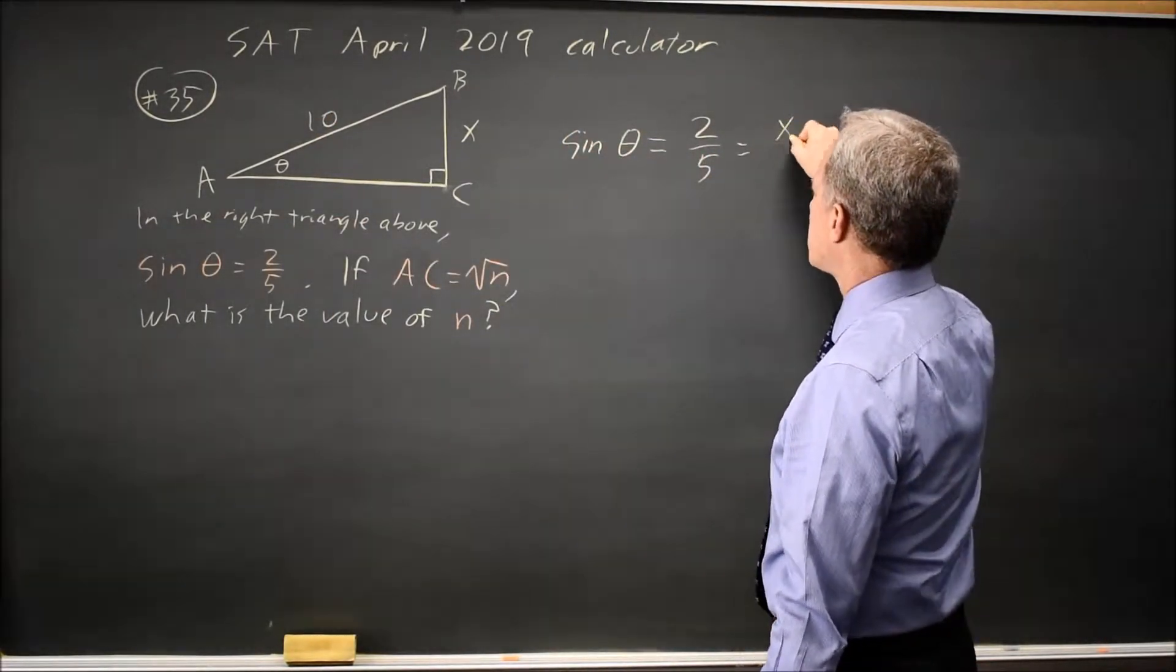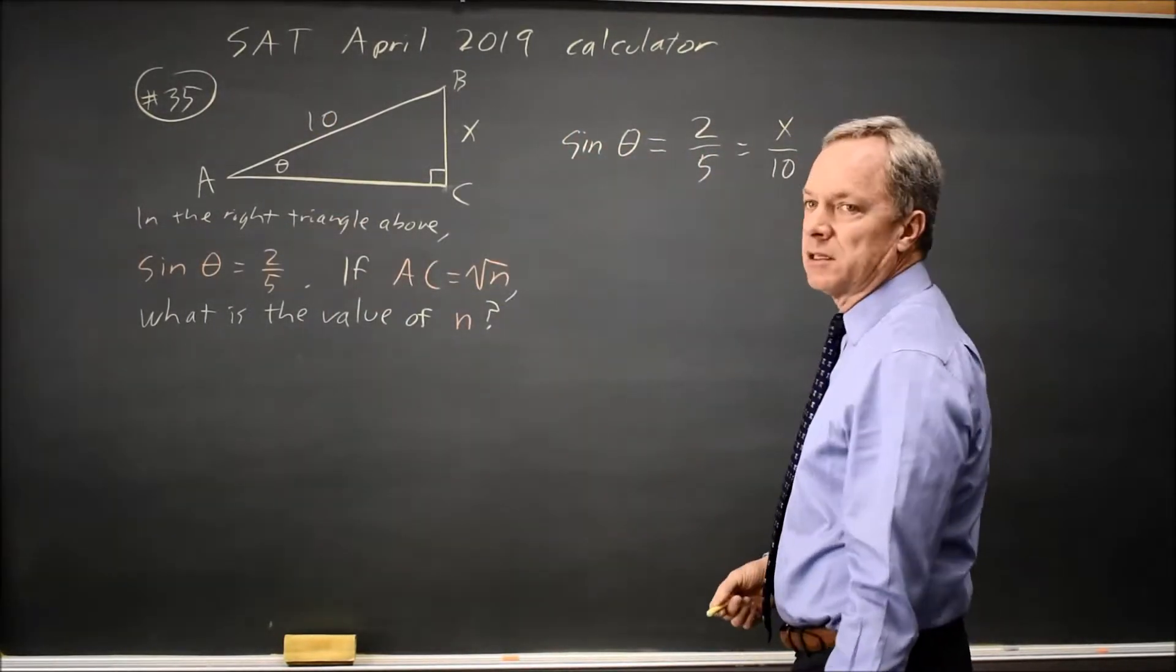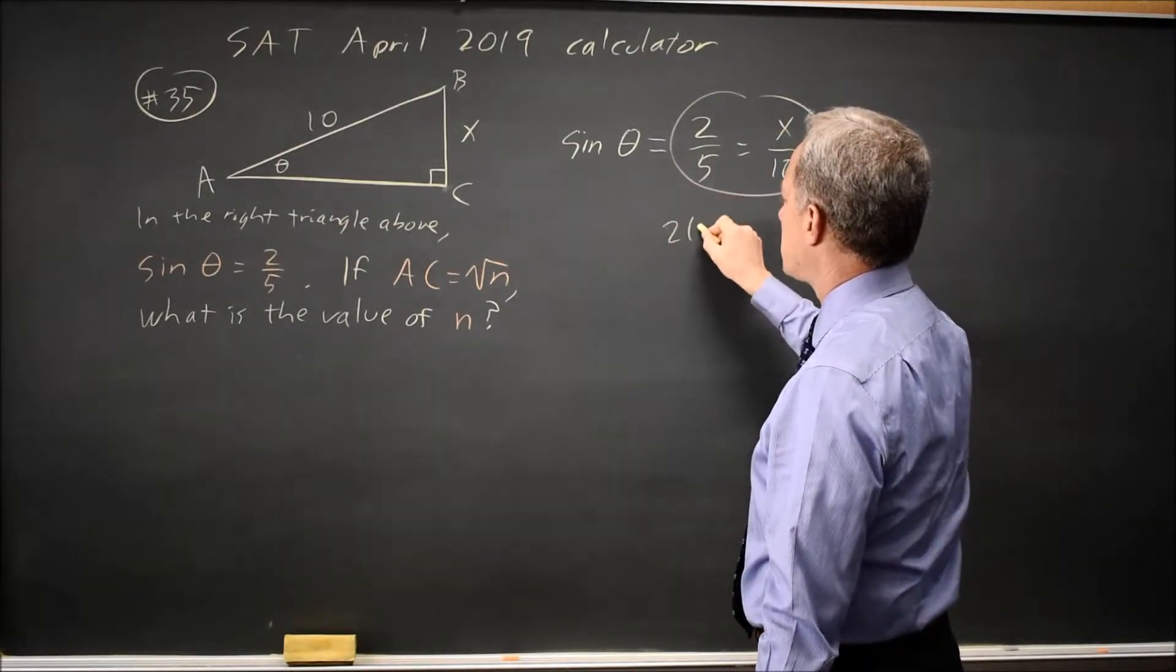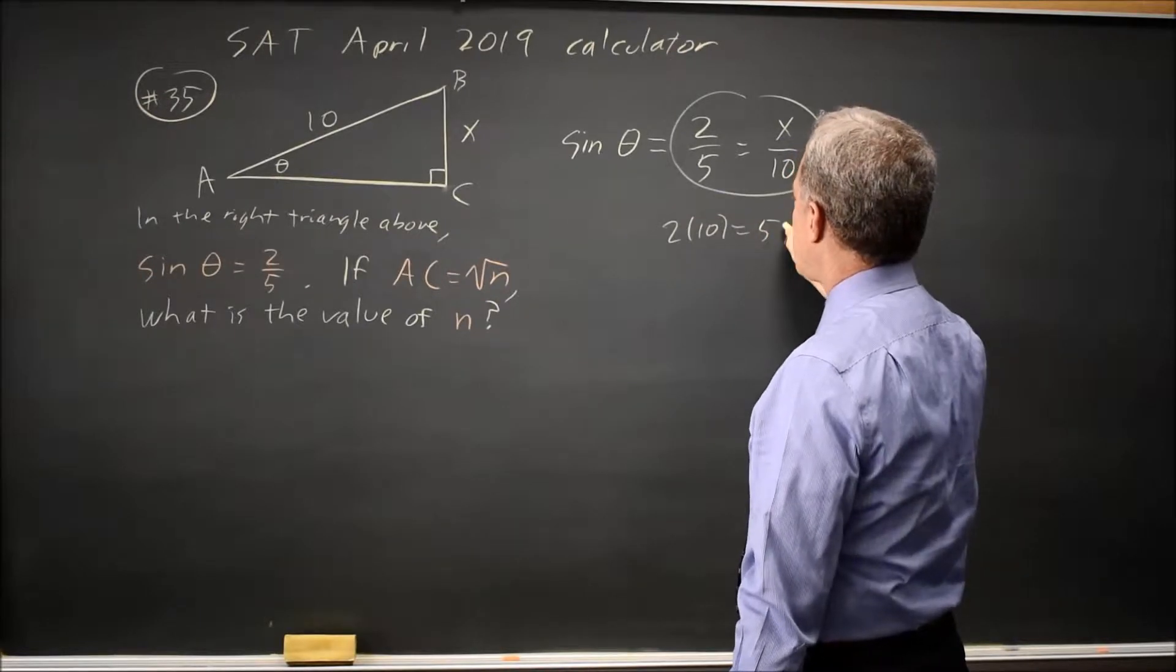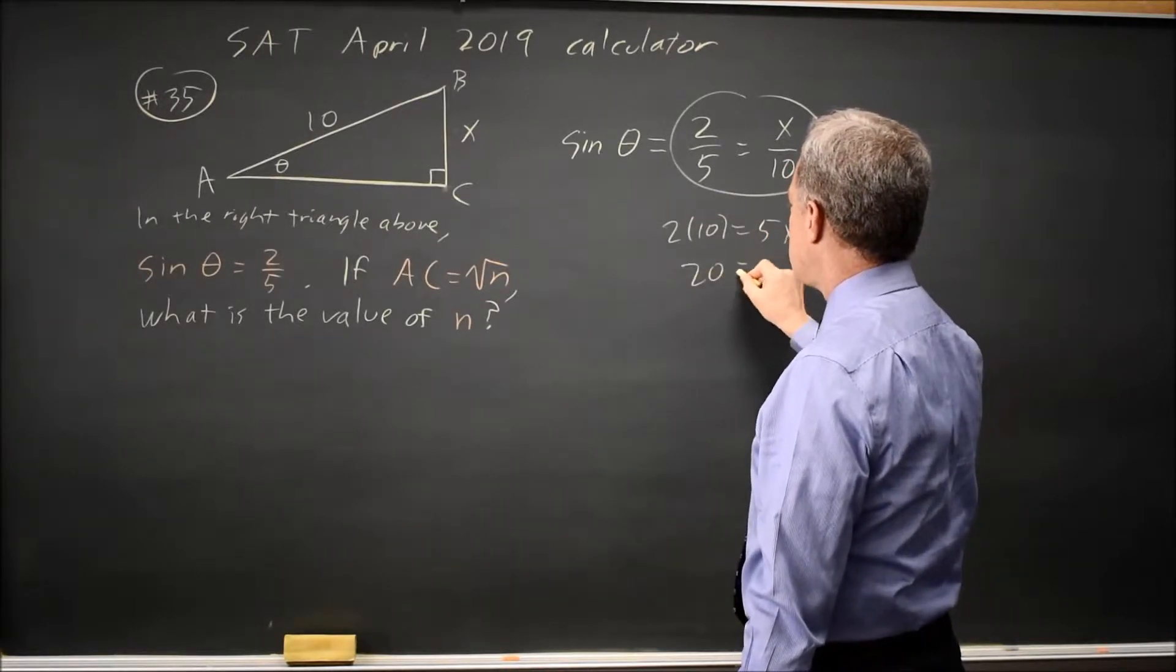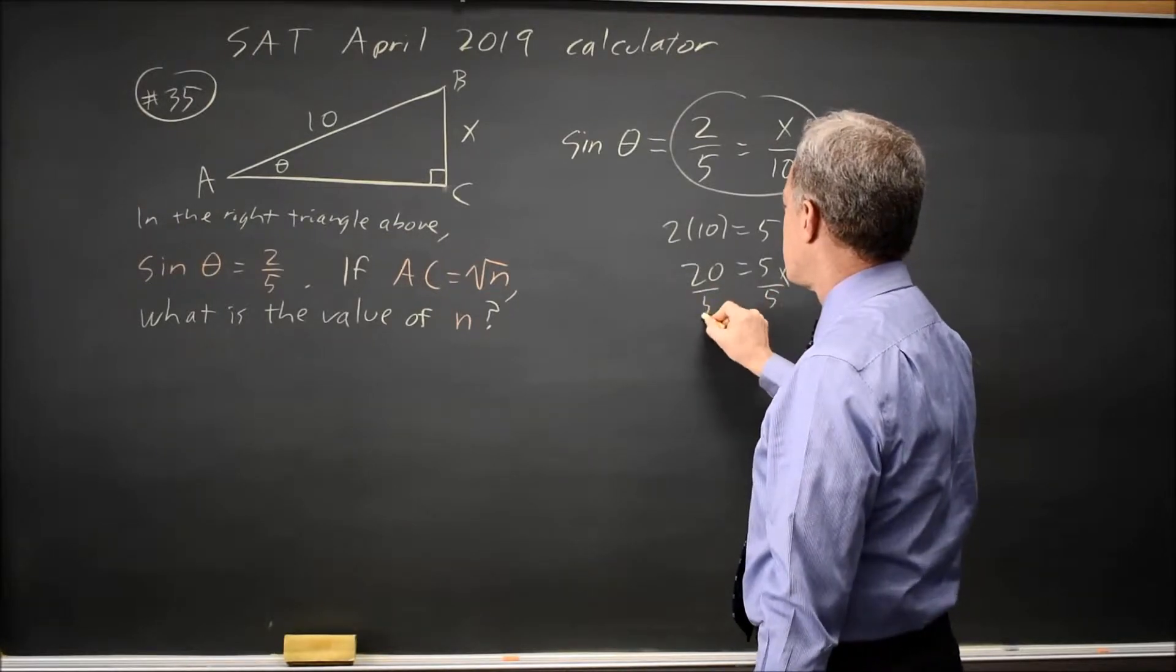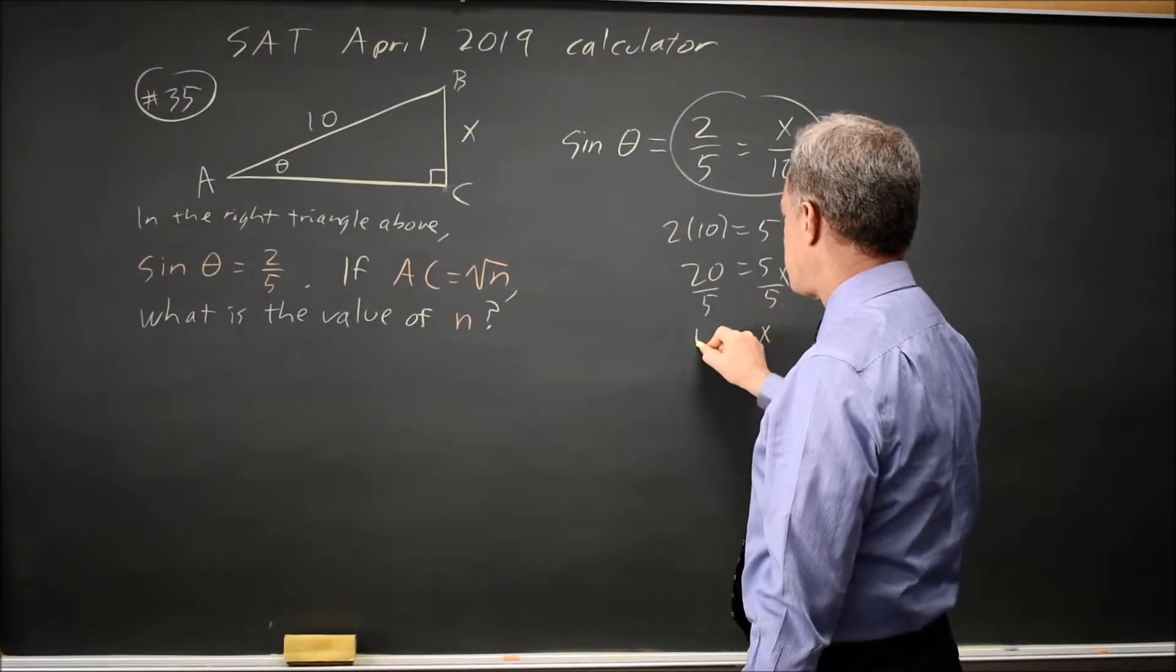So that's equal to x over 10. I can cross multiply this expression to get 2 times 10 equals 5x. So that's 20 equals 5x. Or dividing both sides by 5, x equals 20 over 5 is 4.